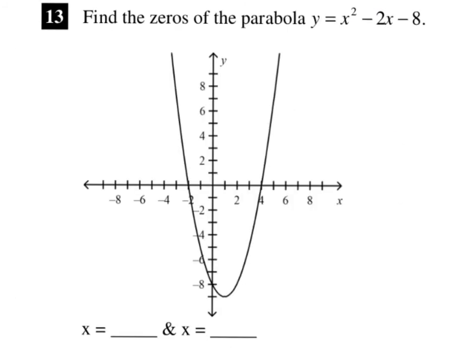Where are these zeros? If you can read the graph and look at these numbers, you'll get the answers right, because it's x equals negative 2 and x equals positive 4.